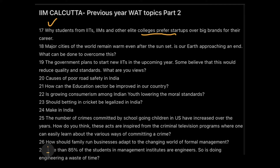Topic 18: Major cities of the world remain warm even after sunset — is our earth approaching an end, and what can be done to overcome this? This is a simple essay on global warming. For a school student the topic might simply be 'write an essay on global warming,' but because you're attempting a WAT round of an elite college, the same topic is presented in a much fancier way.